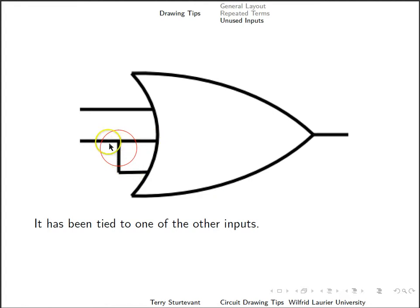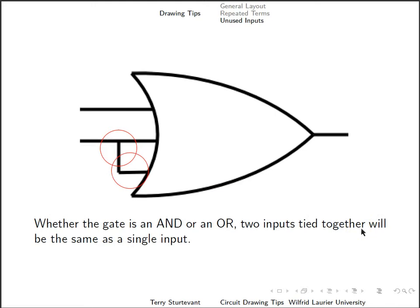Well, if you tie one of those inputs to one of the other inputs, then you will have effectively a two input gate. So whether this gate is an AND or an OR, tying two inputs together will be the same as a single input because when you AND something with itself, you get the same thing, and when you OR something with itself, you get the same thing.